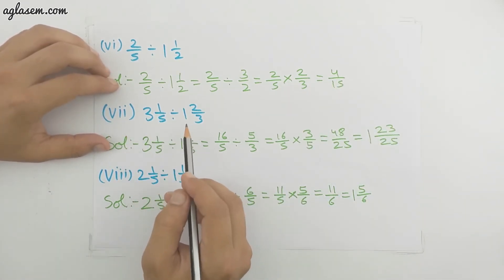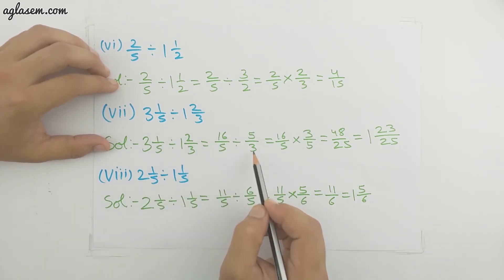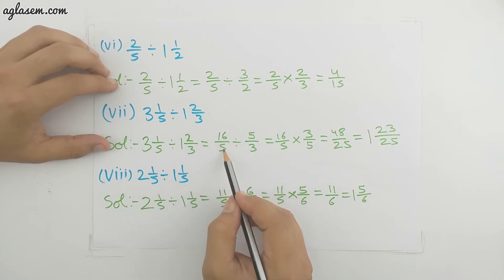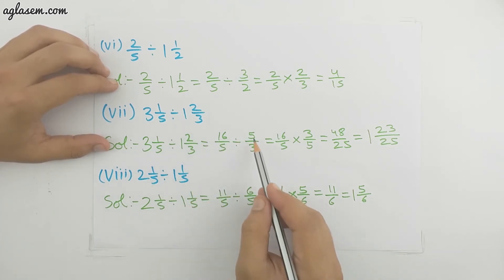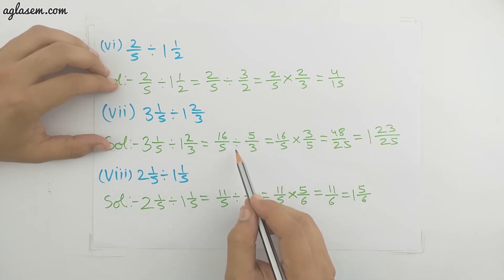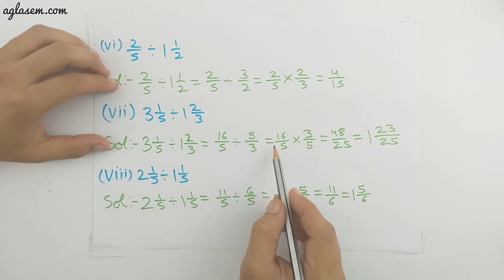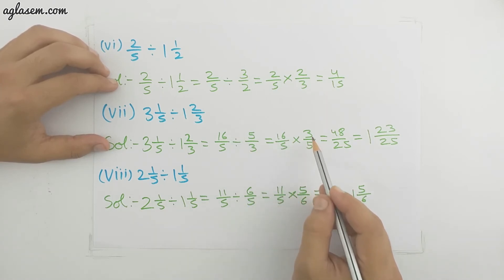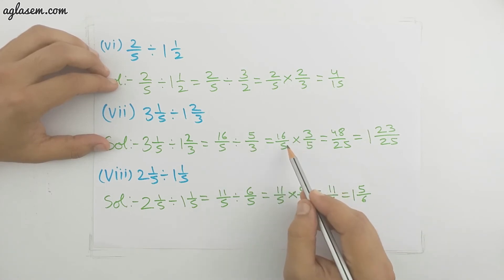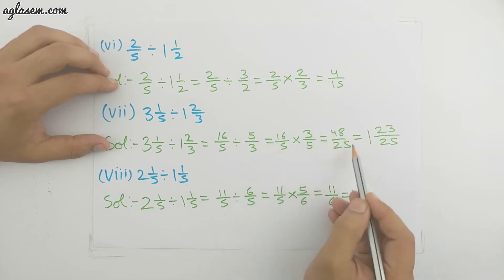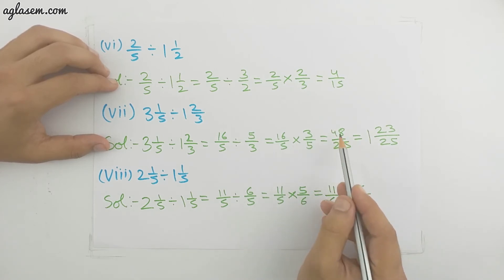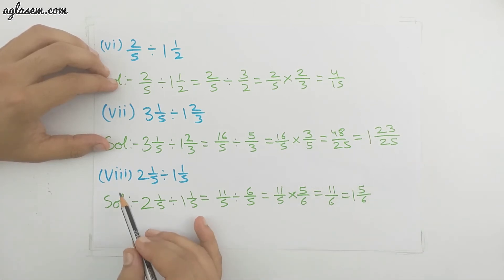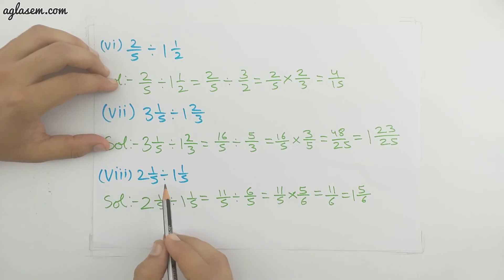Seventh part: both numbers are mixed fractions. We change 3 whole 1/5 to 16/5 and 1 whole 2/3 to 5/3. Dividing 16/5 by 5/3 becomes 16/5 multiplied by 3/5. Multiplying gives 48/25, which is an improper fraction. We change it to the mixed fraction 1 whole 23/25.